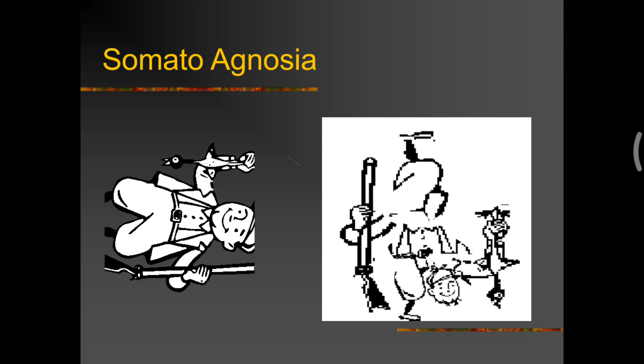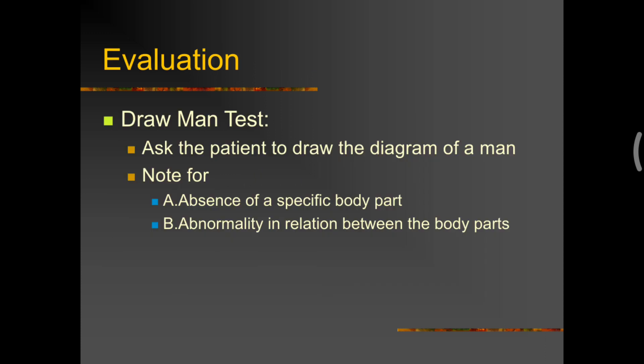I want you to pause this video for a minute and then think what would be his response when he is trying to wear a shirt. So, you would very clearly know that he might be trying to put the sleeve through his foot. So, that's very common in a person with somatoagnosia. The test to identify this is called as draw-a-man test. We ask the patient to draw the diagram of a man and we note for any absence of a specific body part or abnormality in relation between the body parts.